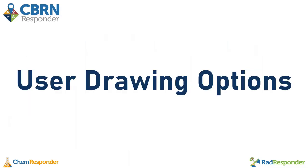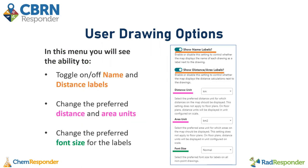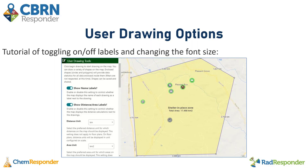Now I'll touch on some user drawing options available after you have saved your drawings. In the user drawings tools tab, you will see a show options button with a menu of different preferences you can adjust. These options include the ability to turn on and off name and distance labels, change the preferred distance and area units, and adjust the font size of the labels.